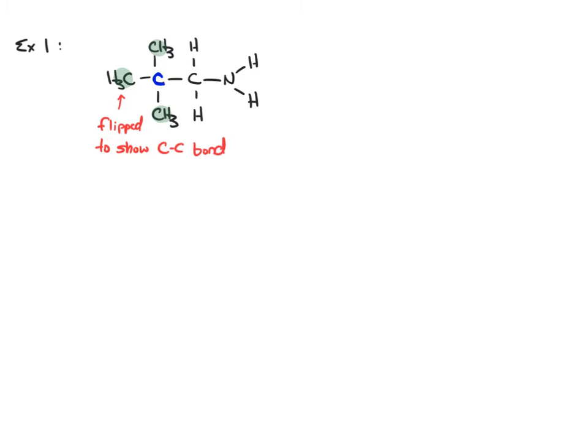We can condense those three and start the condensed structure by writing parentheses CH3 subscript 3 for the three CH3s on that carbon. Next we have the CH2, and then finally the nitrogen with two hydrogens, which is NH2. This is the condensed structure for this molecule.